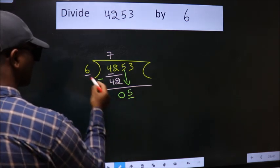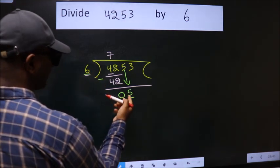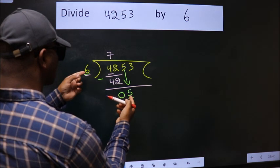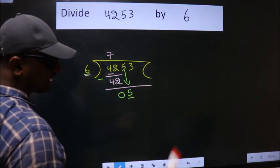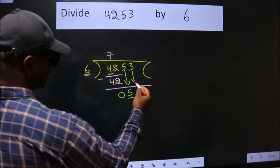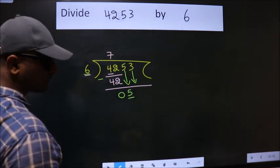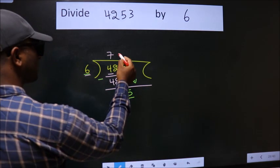Here we have 5. Here 6. 5 is smaller than 6. So we should bring down the second number. And the rule to bring down the second number is put 0 here.